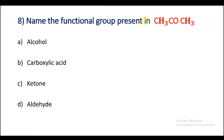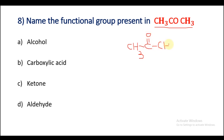Question number 8: Name the functional group present in CH3COCH3. Writing the structural formula: CH3–C(=O)–CH3. Here C double bond O is the functional group of a ketone. So option C is the right answer.